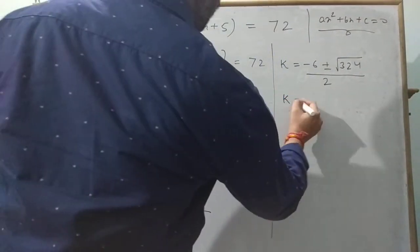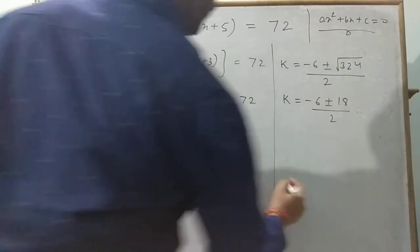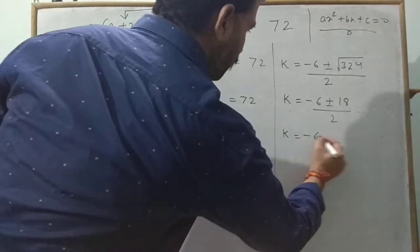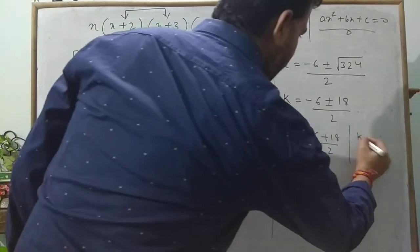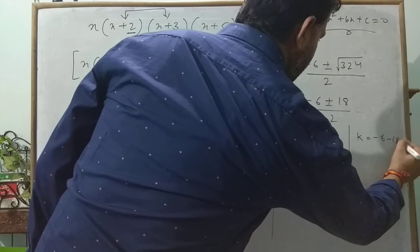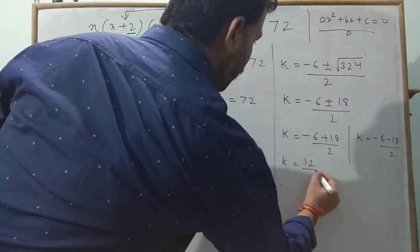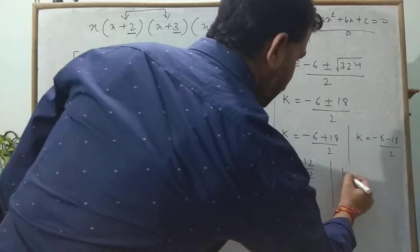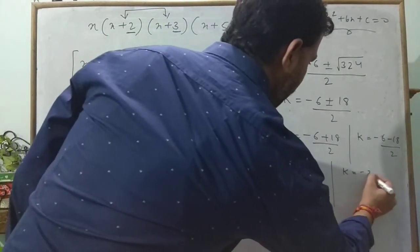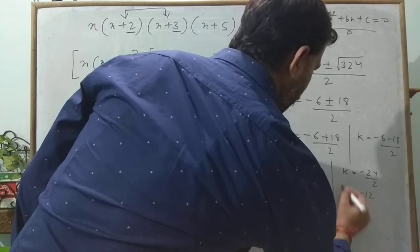So k = (−6 + 18)/2 = 12/2 = 6, and k = (−6 − 18)/2 = −24/2 = −12. These are the two values of k. But this is not the final answer because we want the values of x.